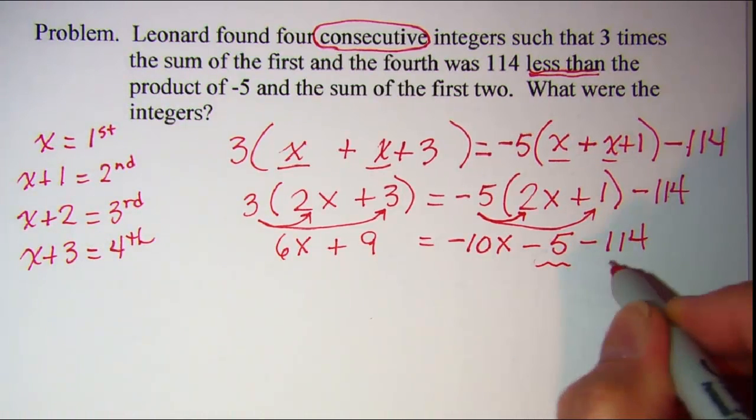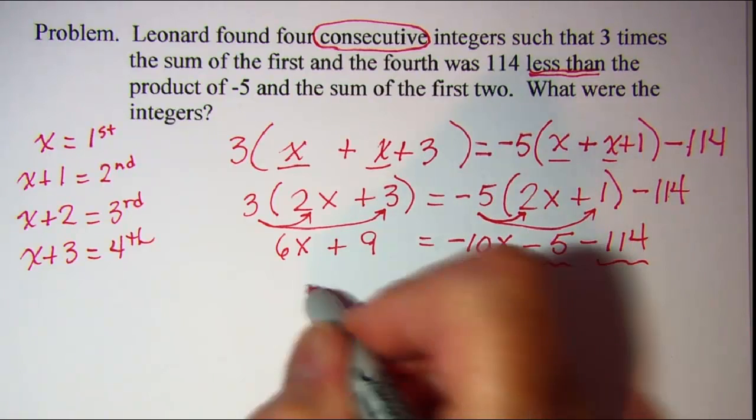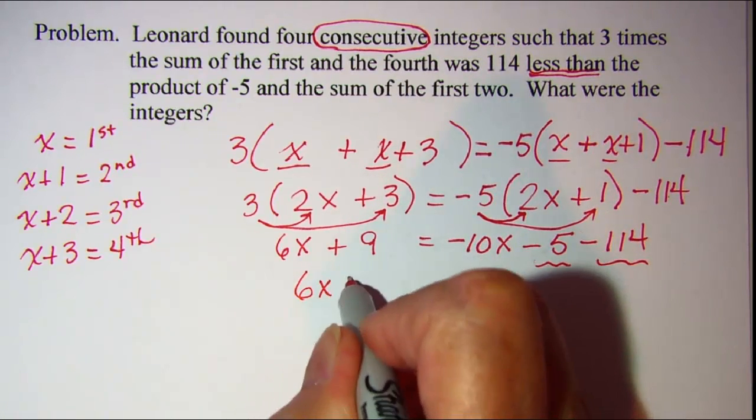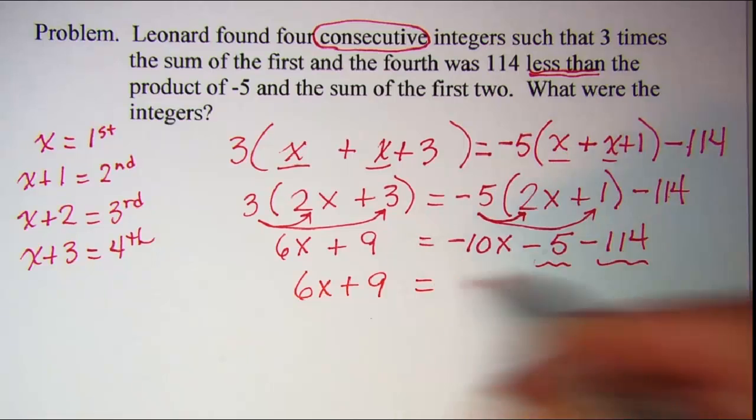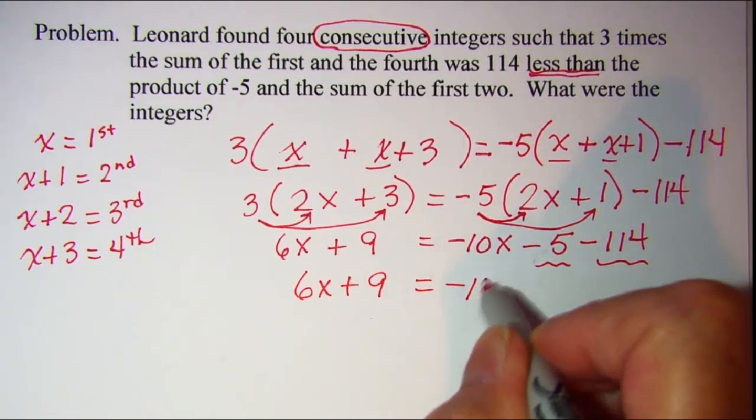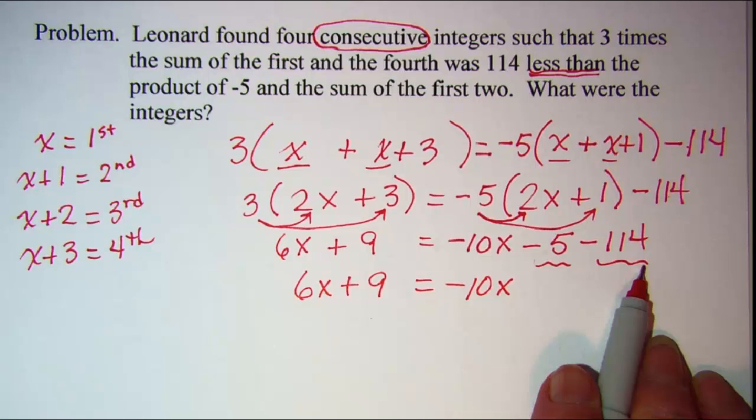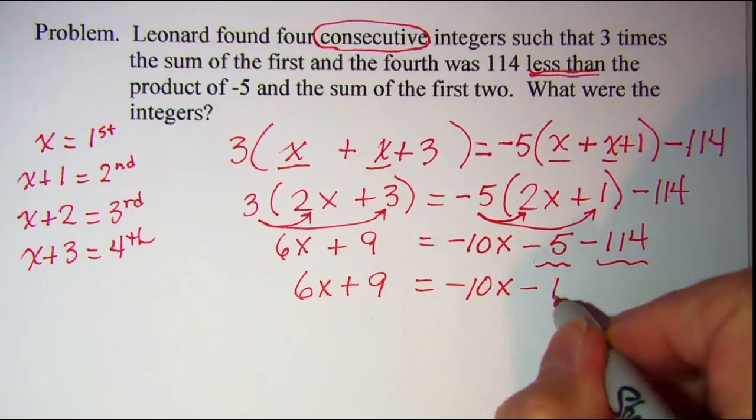Negative 5 times 1 is negative 5. And then just copy this negative 114. Let's combine like terms on the right side here. I'll just copy the left. 6x plus 9 equals negative 10x. And then when we combine here negative 5 and negative 114. I get negative 119.